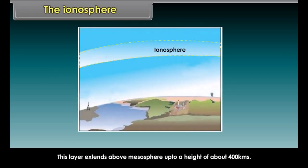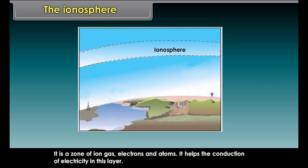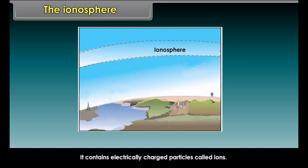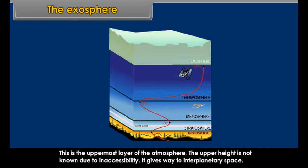The third layer, that is the middle layer of the atmosphere, is called the mesosphere. The average height is about 80 km. Its upper boundary is called the mesopause. Meteorites burn up in this layer on entering from space. The thermosphere is the layer of the Earth's atmosphere directly below the exosphere. Within this layer, ultraviolet radiation causes ionization. The temperature in the thermosphere is very dependent on solar activity.